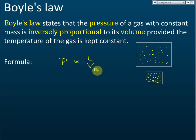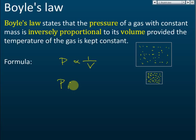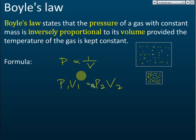If P is inversely proportional to V, the formula we can write is P₁V₁ = P₂V₂. That is the formula for Boyle's Law. Why P₁V₁ = P₂V₂? Because they are inversely proportional. When the volume decreases, the pressure increases, and when the volume increases, the pressure decreases.